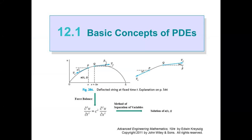Let's take a look at how a PDE can be generated. If we have a string fixed at x equal to 0 and x equal to L, and if we disturb the string, the string is going to vibrate up and down vertically. During the motion, we can describe the deflection from the string's equilibrium position at horizontal positions. This deflection is going to be a function of the position in the horizontal direction and also time.